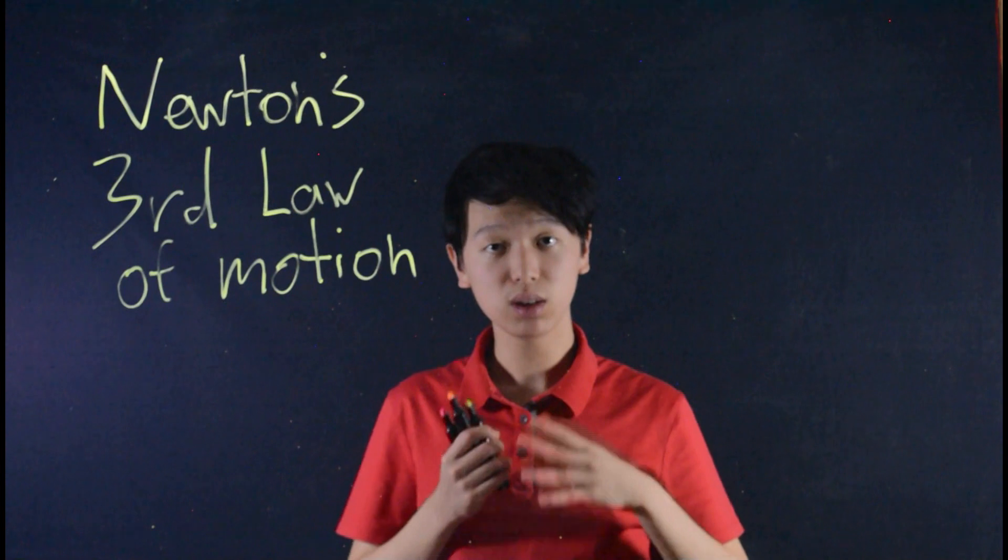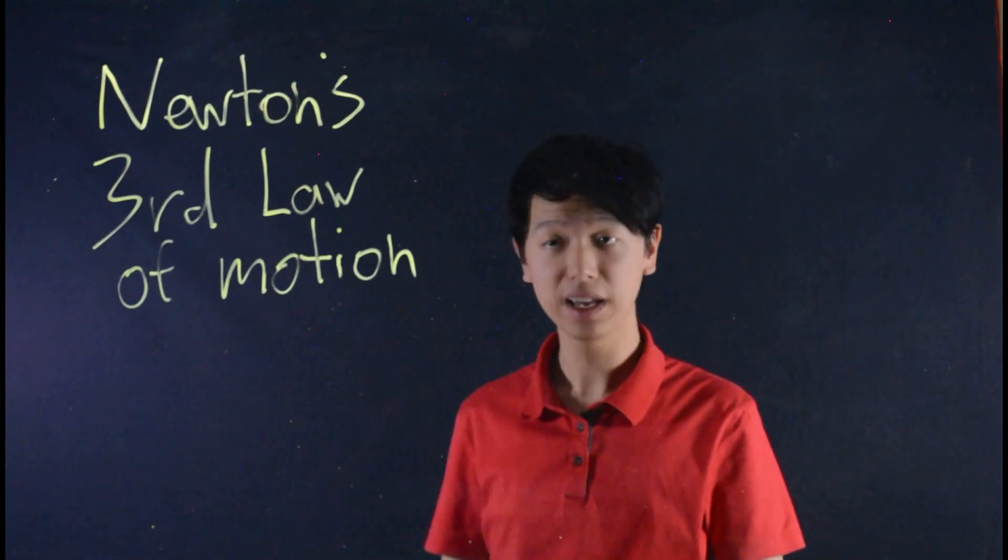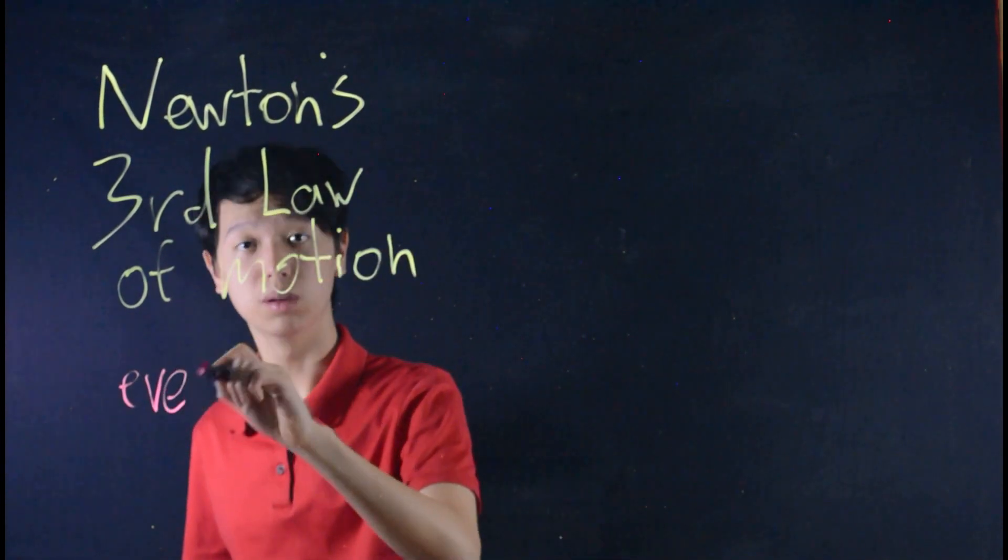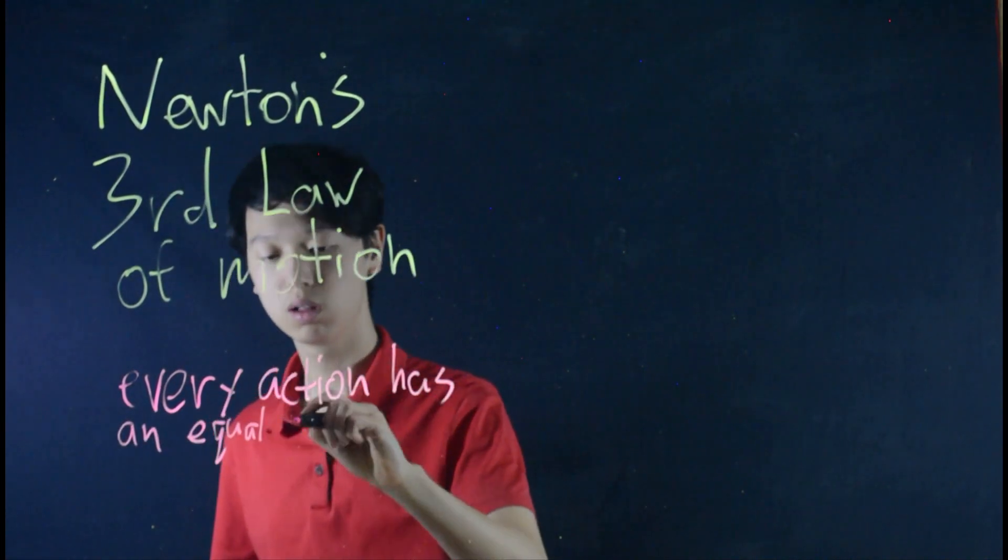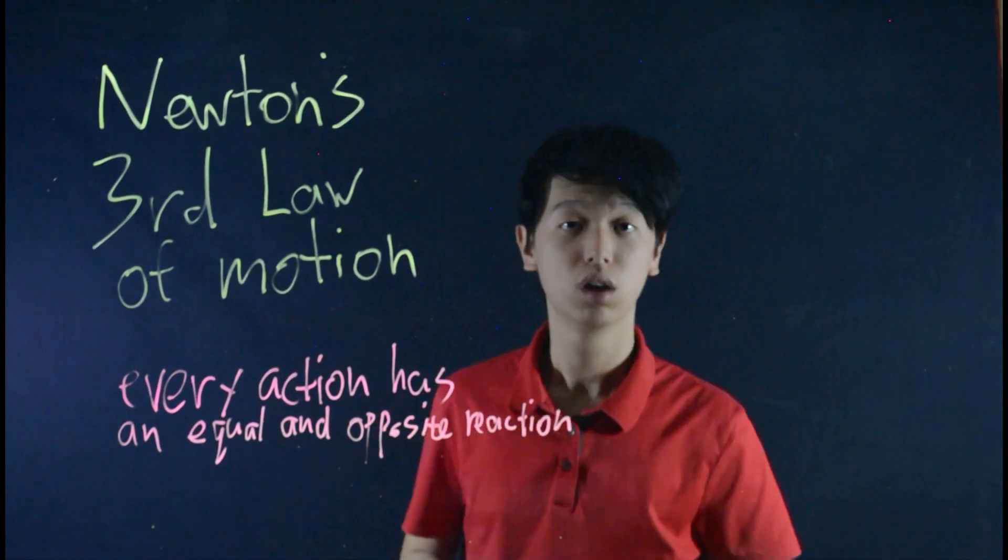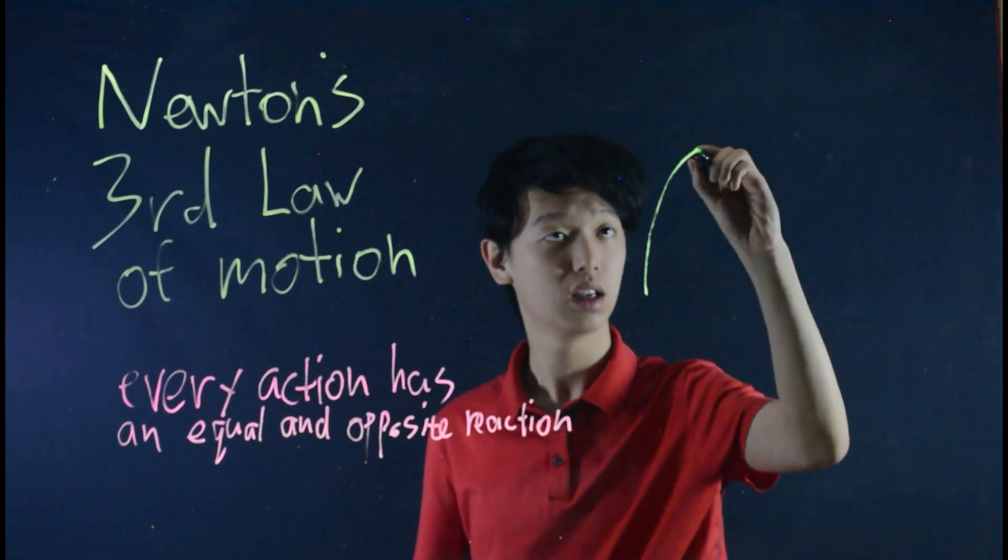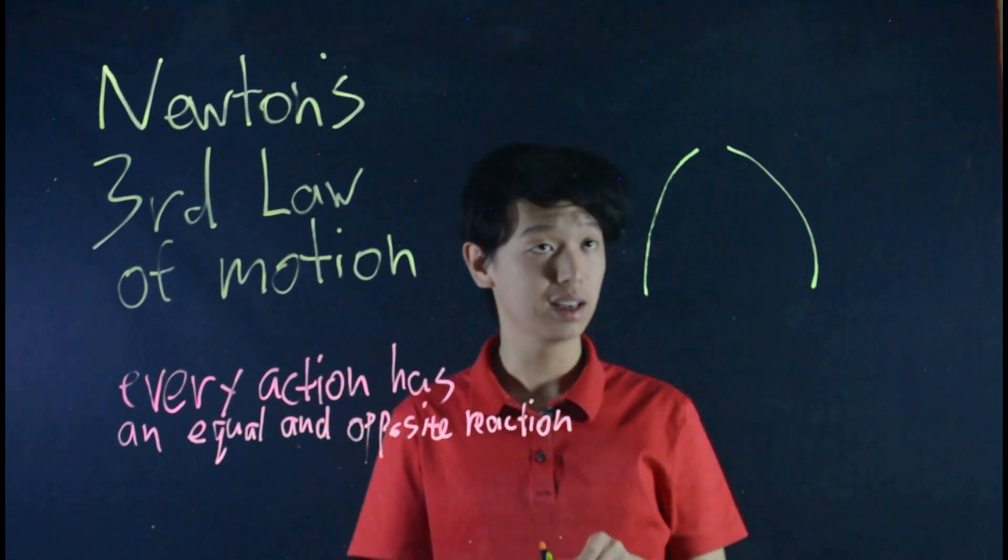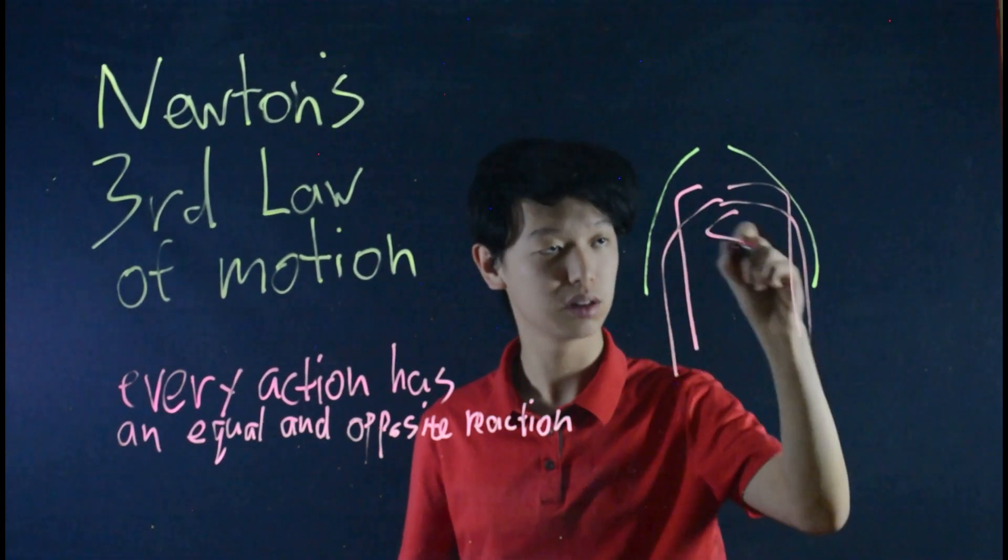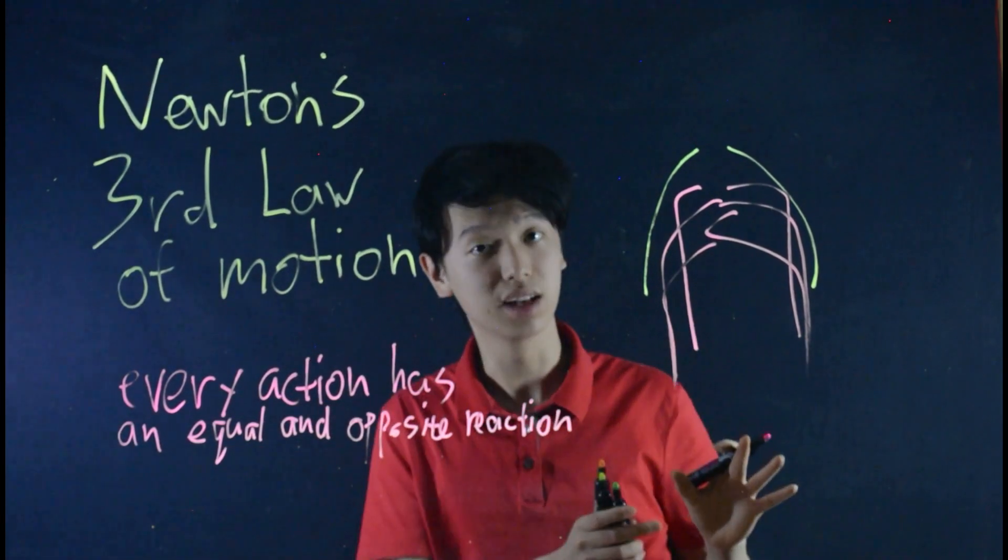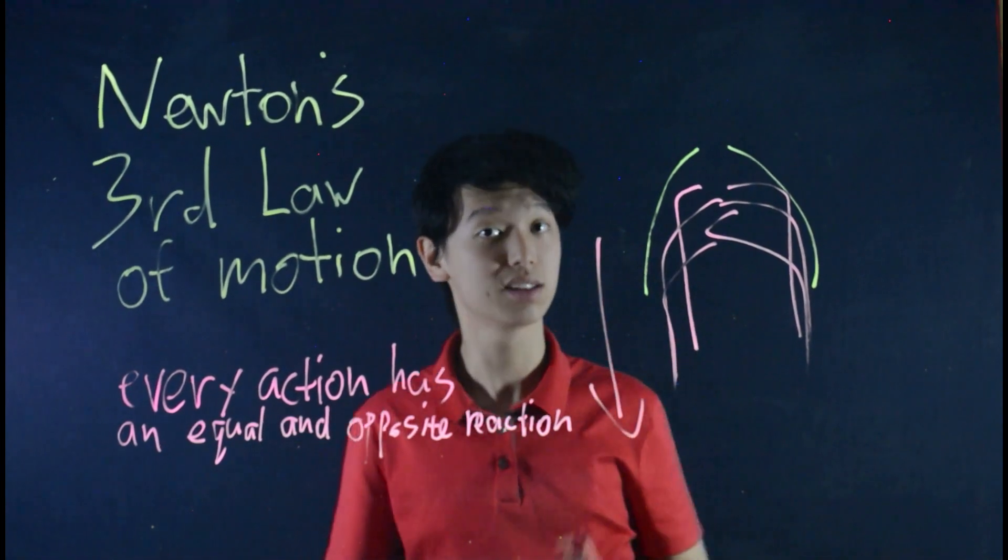In short, rockets use Newton's third law of motion, how every action has an equal and opposite reaction. When the exhaust gases inside a rocket engine expand, so imagine a nozzle here, when the exhaust gases expand, they get pushed outwards. The nozzle of the rocket actually exerts force on the gases, and this is a downward force.